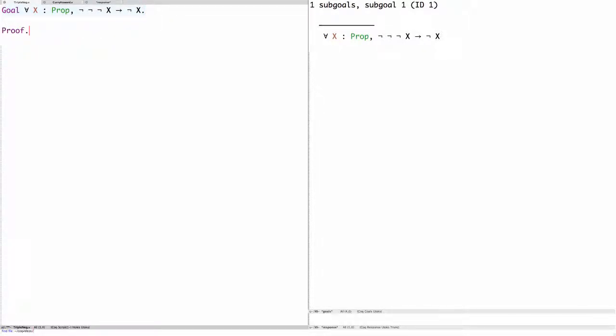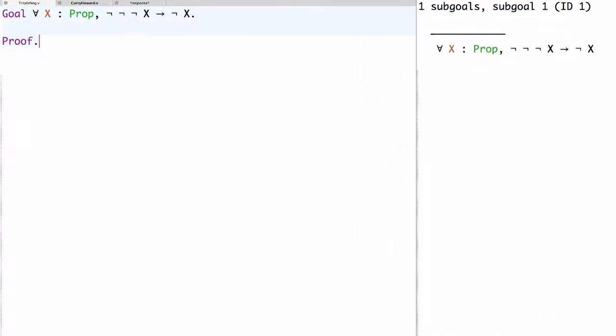Now, let's turn to the task of proving the goal. We'll start off by introducing x and A. So x is the proposition, and A is the assumption of the triple negation of x.